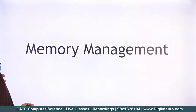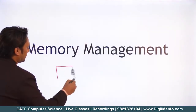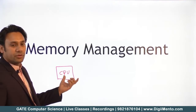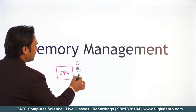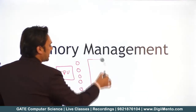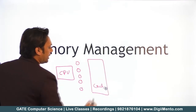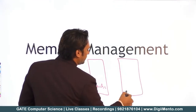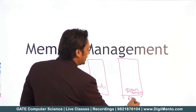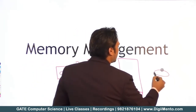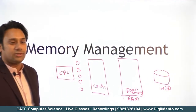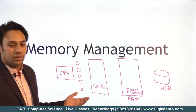Let me give you a brief idea. Assuming that this is your CPU, and with this CPU there are some processor registers — these registers are with your CPU. And then you have something called cache memory. And then you have something called your main memory, which means RAM. And then you have your secondary memory, which can be your hard disk drive or it can be a solid state drive.